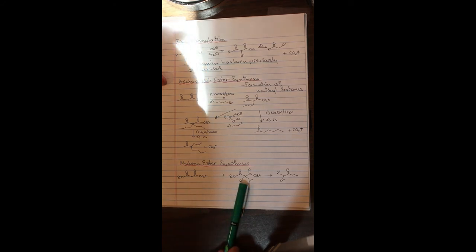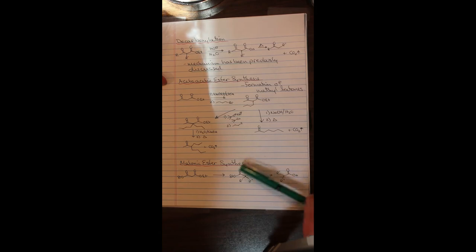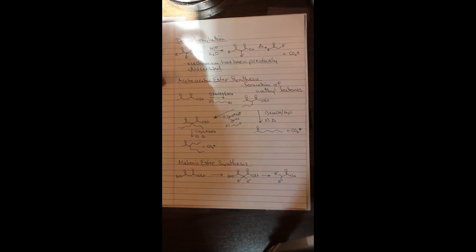Malonic ester synthesis, here we have a diester species. Again, we have a very reactive alpha position, which we can alkylate. The conditions for this reaction are very similar to everything that we've seen so far. And then we can hydrolyze these to the dicarboxylic acid, and then subsequently decarboxylate to generate this species.